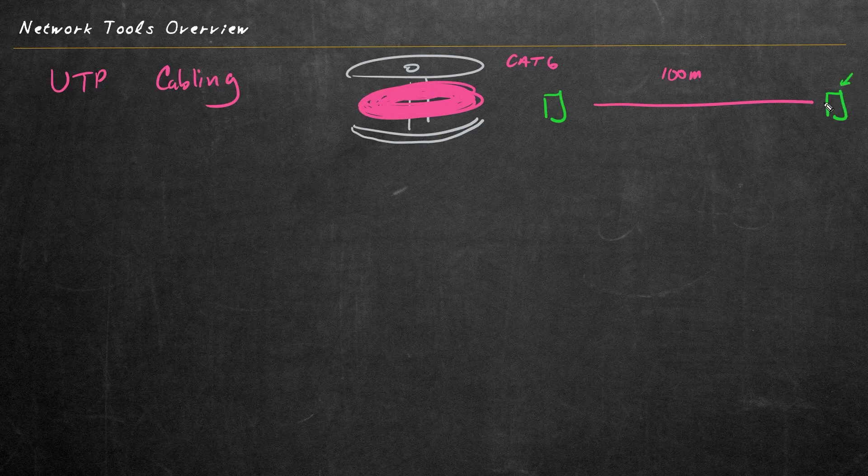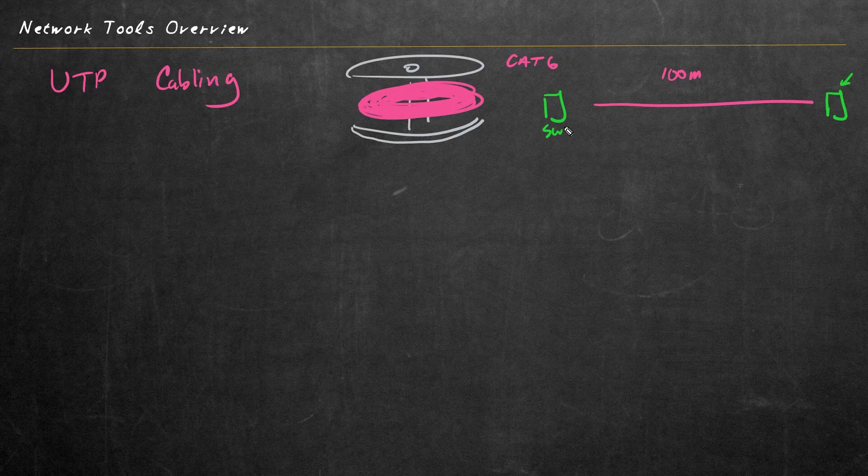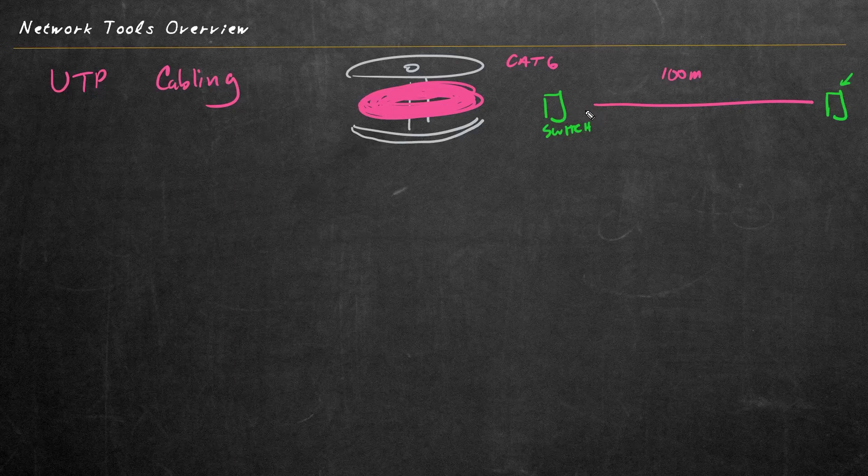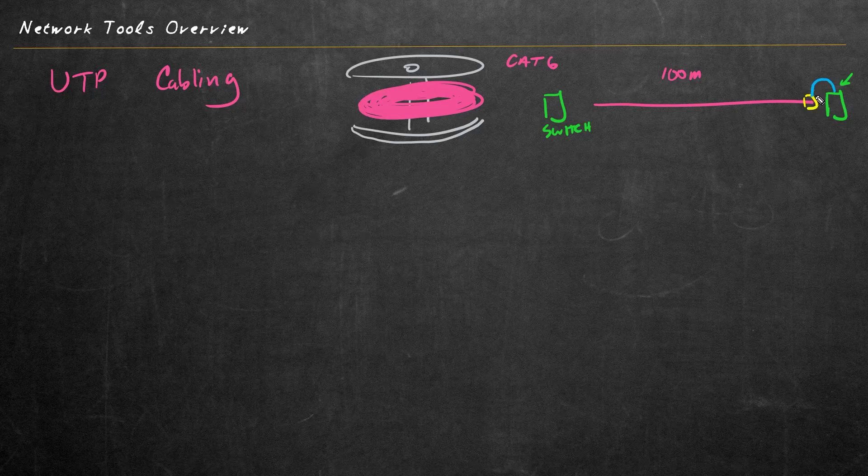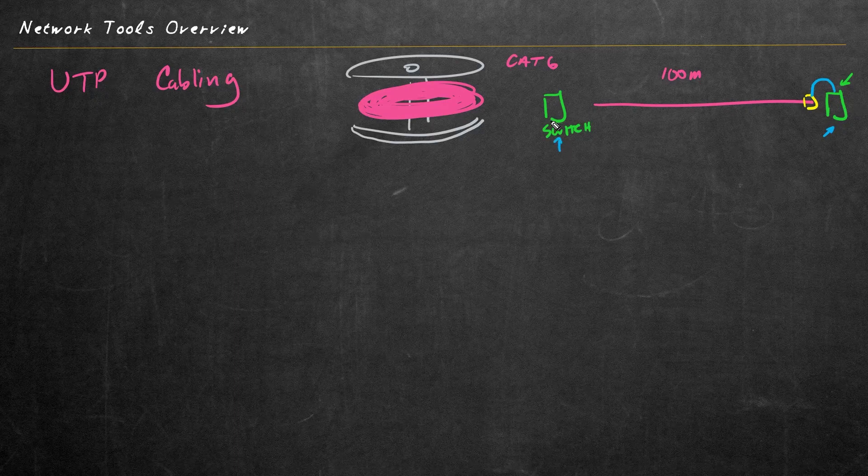This could be, for example, a PC, and maybe over here is a switch. And that 100 meters needs to also include any patch cables we have. So maybe this right here terminates to a little outlet in the office, and then the customer has a little patch cable that goes from their PC to the outlet. That 100 meters is from this device here all the way to the port here.